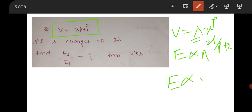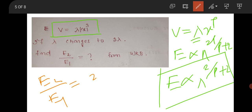Your energy will vary with the constant lambda as lambda to the power 2/(p+2). So you have to substitute this formula. It will be E2/E1 equals (2λ/λ) to the power 2/(p+2).